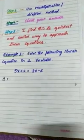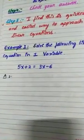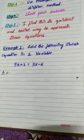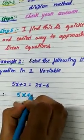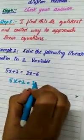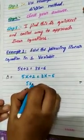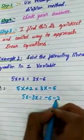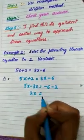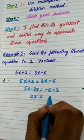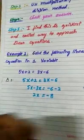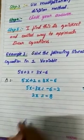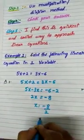Let me take some examples to understand it better. First example — solve the linear equation: 5x plus 2 equals 3x minus 6. Bring the variables to one side: 5x minus 3x equals minus 6 minus 2. Subtracting gives 2x equals minus 8. Dividing both sides by 2, we get x equals minus 4.